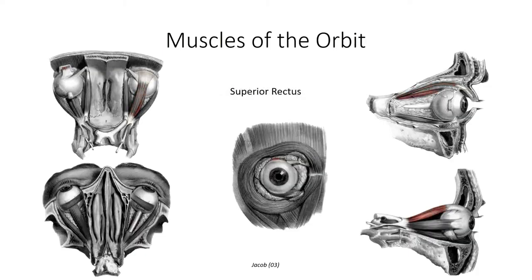Next on the list is the superior rectus. This muscle inserts onto the superior aspect of the sclera and contracts to elevate the pupil. It can also adduct and inwardly rotate the eye. Opposite the superior rectus, the inferior rectus inserts on the inferior surface of the eye. This muscle is antagonistic to the superior rectus and serves to depress the pupil. It can also assist in adducting the pupil, but is antagonistic in externally rotating the eye.